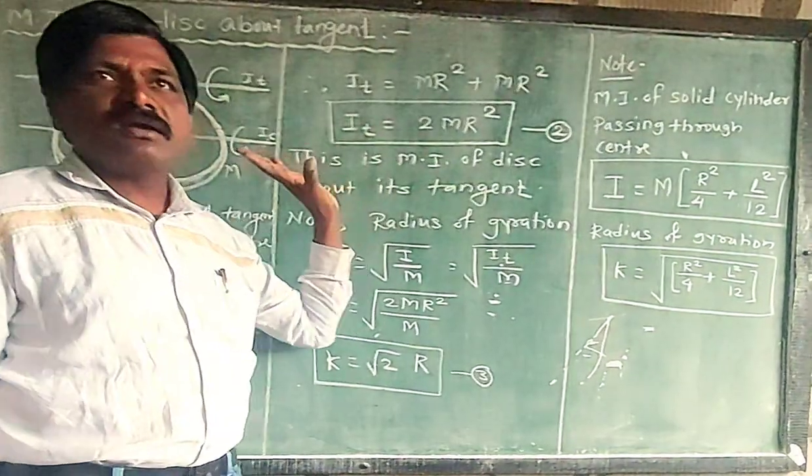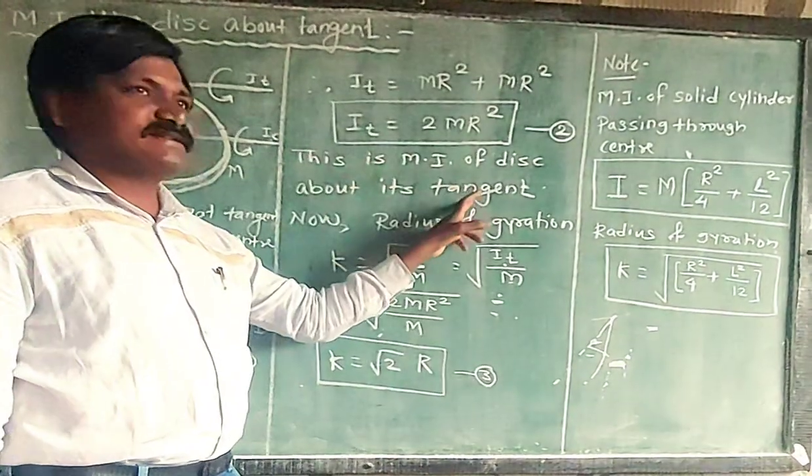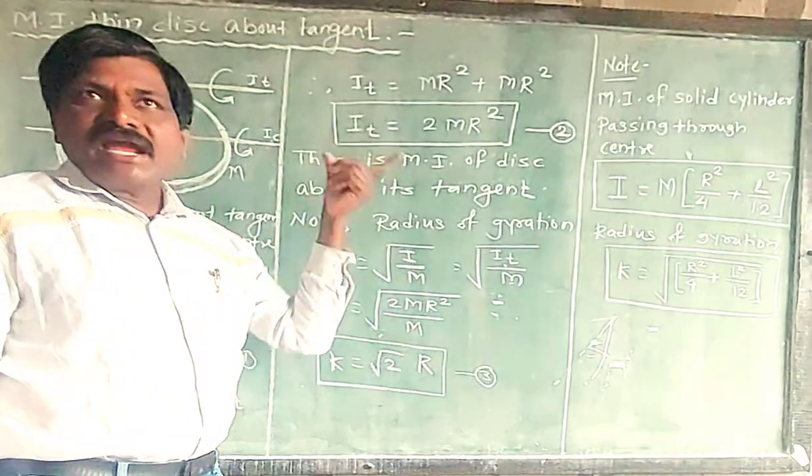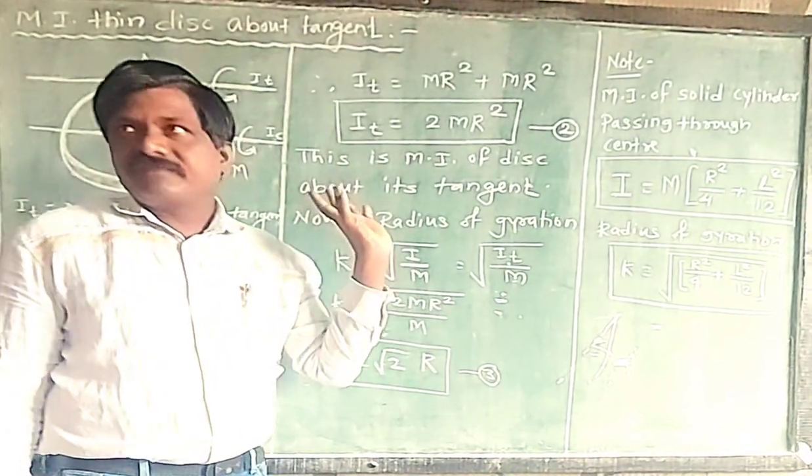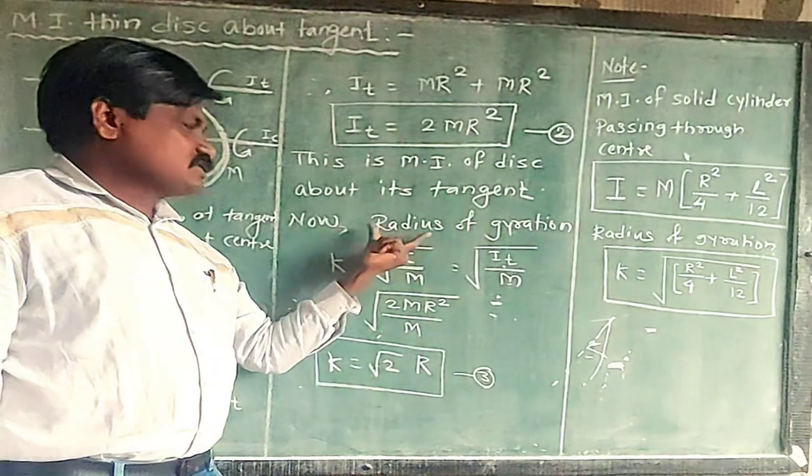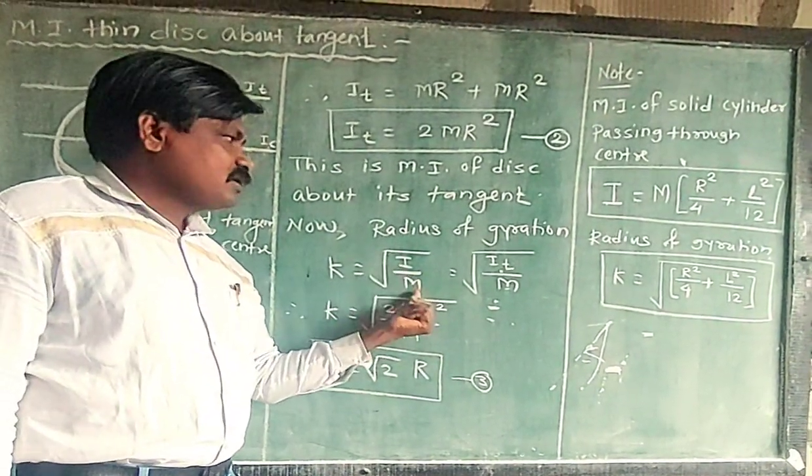And this is the expression for moment of inertia of a disc about an axis passing through its tangent. Now from that formula we can calculate the radius of gyration. Radius of gyration can be shown. What's the formula?